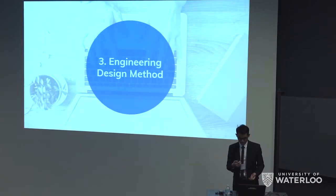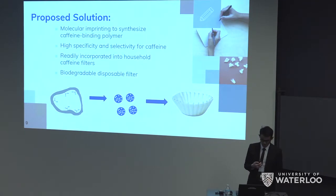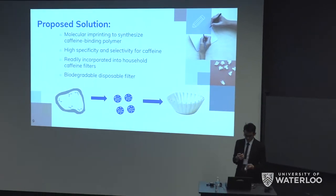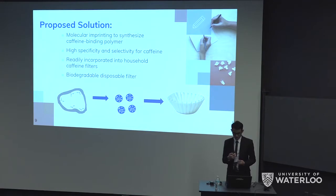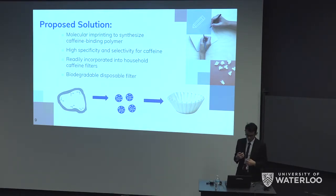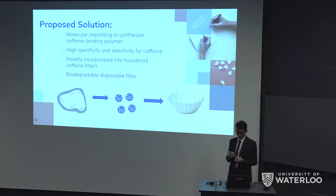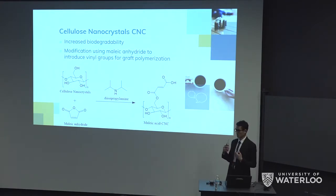In order to fulfill these requirements and make a convenient and disposable decaffeinating filter, we implemented several key components in our design. First, we use a method called molecular imprinting to synthesize a polymer that can specifically bind to caffeine molecules, and then chemically attach these polymers to the cellulose fibers found in paper pulp. Also, in order to increase biodegradability, our polymers are partly made from cellulose nanocrystals, which are the crystalline portions of cellulose fibers. This will also provide better mechanical strength and increase the structural integrity of our filters.